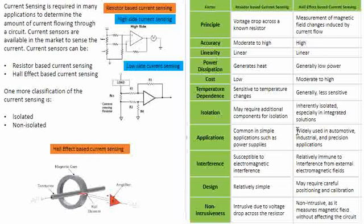Hall effect sensors in terms of applications — whether for accurate readings or demanding environments — go beyond what resistor-based sensing can offer. Resistor-based current sensing is restricted to simple, commercial applications where high accuracy is not needed and currents are on the lower side. Hall effect-based sensing can be used in a wide variety of applications, especially where immunity to the surrounding environment is important. Interference plays a crucial role and can disturb resistor-based sensing, giving Hall effect another advantage.